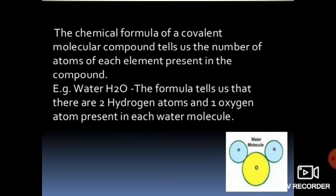Today we will understand the method of writing chemical formulas of compounds. The chemical formula of any compound tells us the number of atoms of each element present. For example, looking at the water molecule structure, it consists of two hydrogen atoms and one oxygen atom, so its formula is H2O.